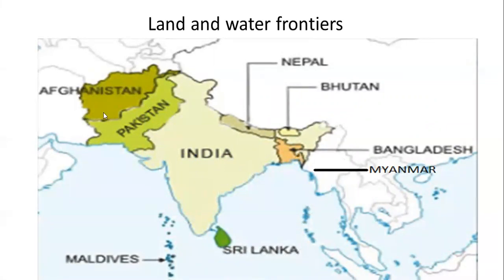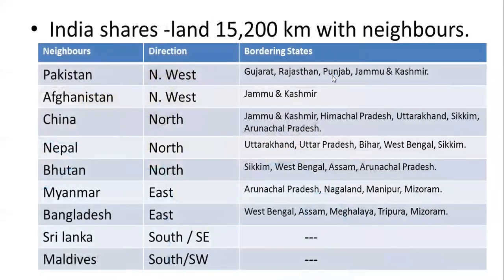What are all the neighboring countries of India? Afghanistan shares a very small boundary with India. Then we have Pakistan, Nepal, Bhutan, Bangladesh, Myanmar, Sri Lanka, and Maldives. Bordering states are not given as part of your book, but if you go through this for the NTSC exam, you can clear it very easily because so many questions are asked from this part. So neighbors to the northwest: Pakistan and Afghanistan.